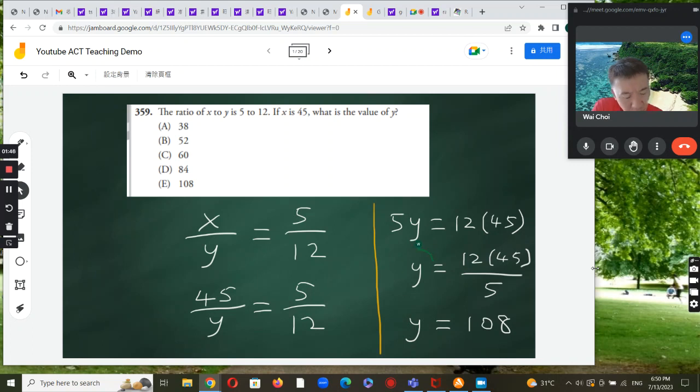And what is y then? To calculate y, what we need is we are going to divide both sides of the equation by 5. So you are left with only a single y on the left hand side. And then on the right hand side, you are going to have 12 times 45 divided by 5.